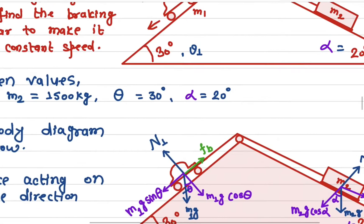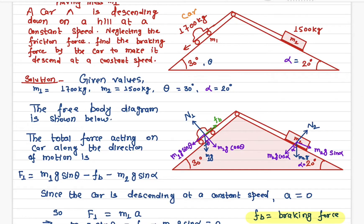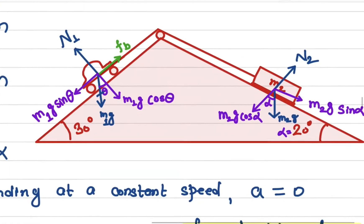The given values: m1 is 1700 kilograms, m2 (the mass connected to the car) is 1500 kilograms, angle theta is 30 degrees, and angle alpha is 20 degrees. Before we solve this problem, the first thing we need to do is draw the free body diagram.